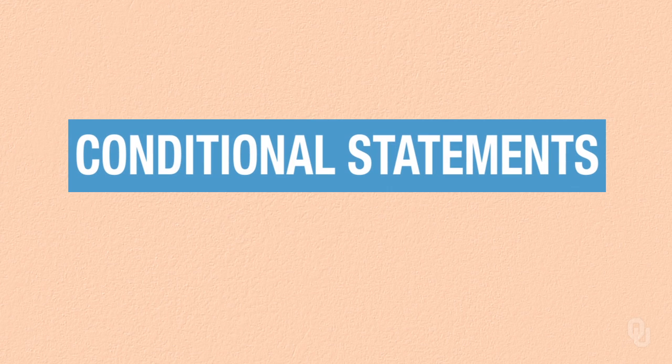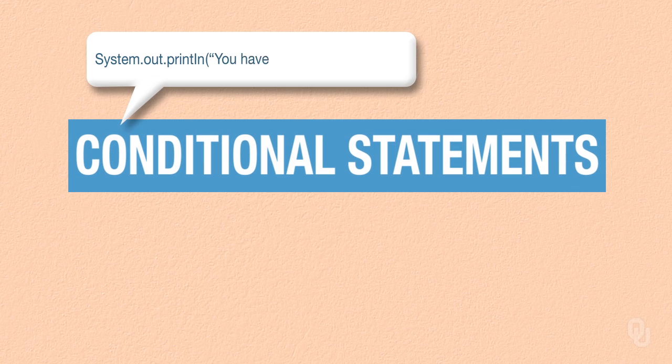Conditional statements are what allows Java to sometimes do one thing and sometimes do something else. Suppose we have an integer variable that stores the number of tweets that somebody has posted, cleverly called tweets. We could write out that value, but that isn't really right or at least it isn't beautiful, because what it should say is 'you have one tweet' without an S, or 'you have 10 tweets' with an S.